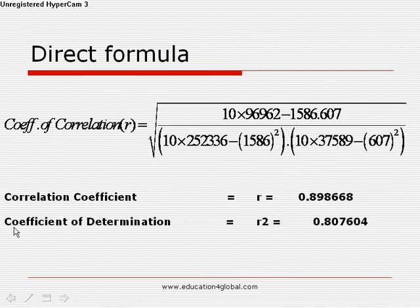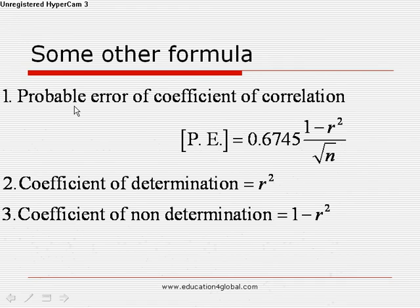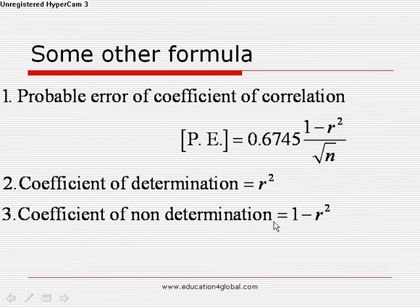We also find out the coefficient of determination and coefficient of non-determination. The coefficient of determination equals r², which is 0.80706. The probable error of the coefficient of correlation is PE equals 0.67451 times (1 minus r²) divided by the square root of n, where r² is the coefficient of determination and n is the number of observations. The coefficient of non-determination equals 1 minus r², since the total perfect value is 1.